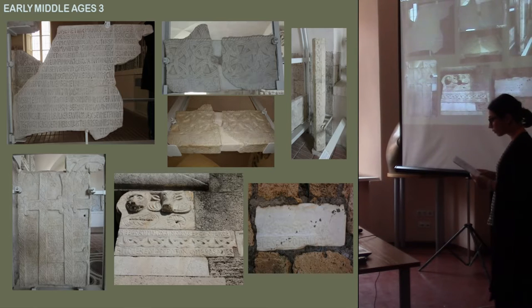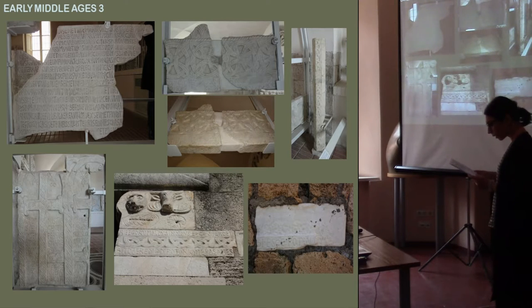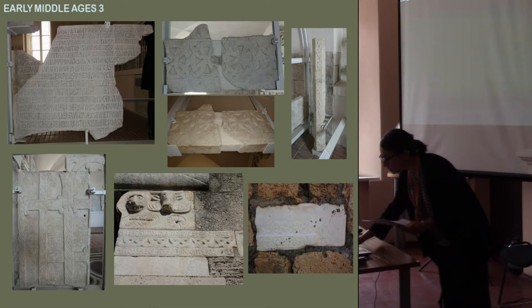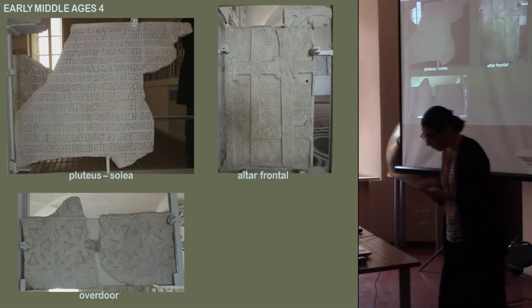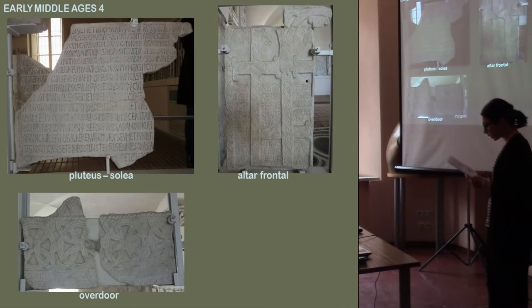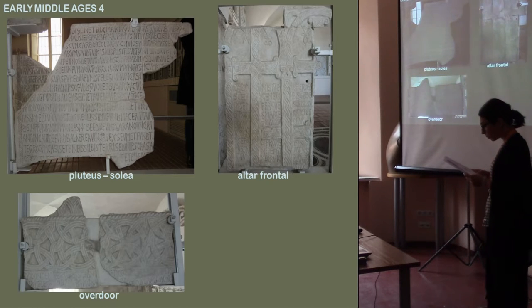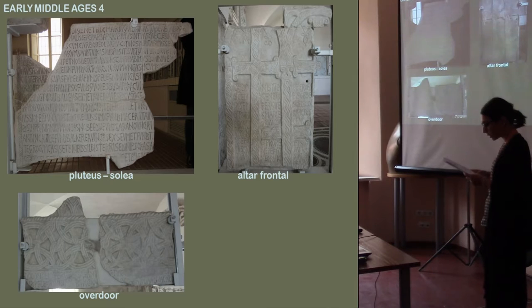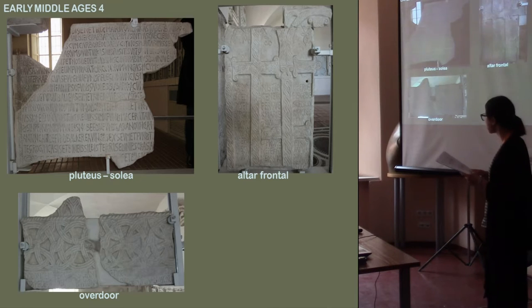Biographical data from Romaldus confirm this dating — he does indeed appear among the signatories of the Roman Synod of 826. Analysis of the morphology and measurements, paying particular attention to the thickness and arrangement of writing and decoration, has allowed for the identification of an altar frontal, a pluteus forming part of a presbytery enclosure or of a solea, and an overdoor. The pieces were then placed in different parts of prestige in the church, as special markers for the attendance areas of the liturgical space.